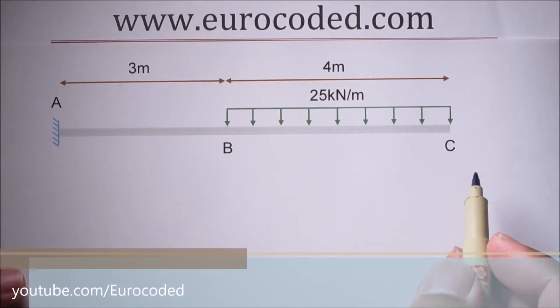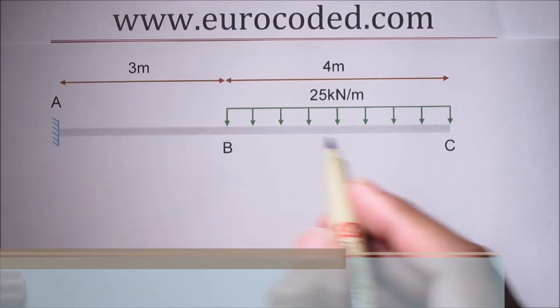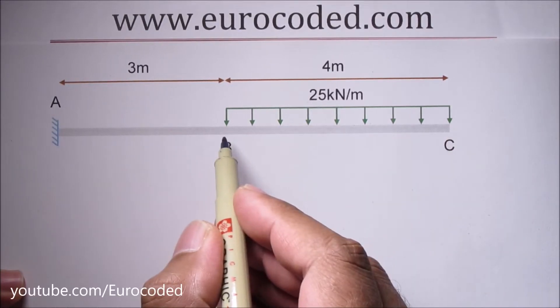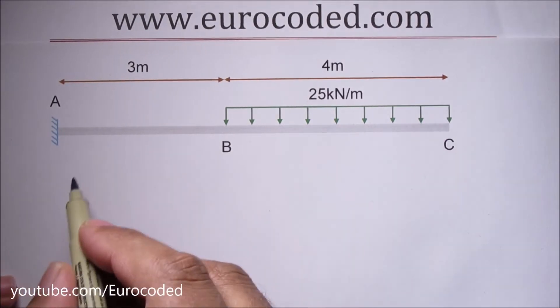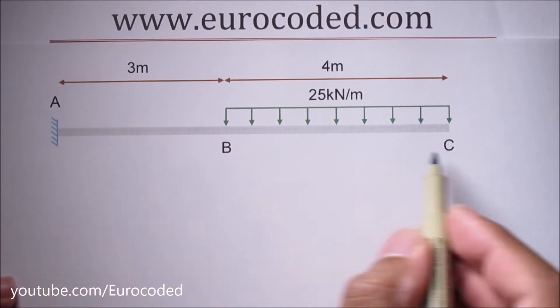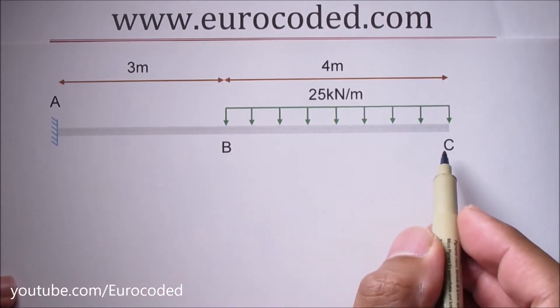In this example we have a cantilever beam with a uniformly distributed load only applied to a part of the beam. We can determine reactions by looking at the overall equilibrium of this beam.